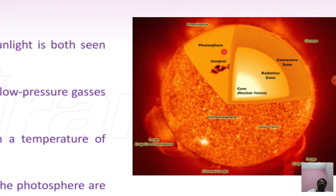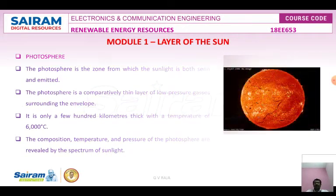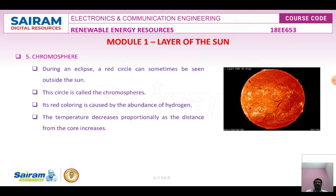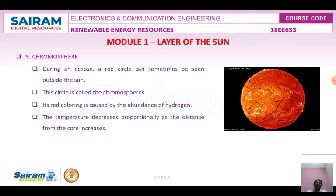This newly discovered gas was named helium after the god of the sun in Greek. Next is the chromosphere. During a solar eclipse, a red circle visible on the outside of the sun is the chromosphere. It is red in color, caused by the abundance of hydrogen. From the center of the sun to the chromosphere, the temperature decreases proportionally as distance from the core increases. The chromosphere temperature is nearly 7000 Kelvin, which is hotter than the photosphere.